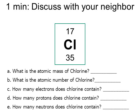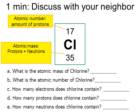Pause the video if you want to try the chlorine questions. The small number is the atomic number; the larger number is the atomic mass. Question A: the atomic mass is 35. Question B: the atomic number is always the smaller number — that's 17. Question C, how many electrons does chlorine contain? That's 17, because the electron number is usually the same as the proton number. Question D: how many protons does chlorine contain? By definition, that's the atomic number — 17. And the last one: how many neutrons? There are 17 protons plus how many neutrons equals 35. 17 plus what equals 35? The answer is 18.